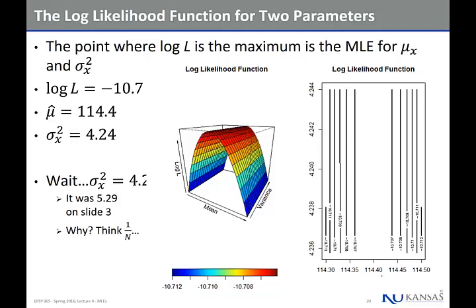If you go back to the slide at the beginning, you're going to say, wait a minute — the variance we've been using this whole time was 5.29, why is it 4.24? That's because in MLE terms, your MLE for the variance is like taking that variance formula and dividing by N, whereas 5.29 was that formula divided by N minus 1. With five observations there's a big difference between the two. If we had 500 observations, it'd be very small. So this MLE is biased for a five observation sample.